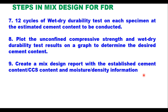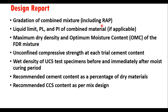After that, create a mix design report with the established cement content and moisture-density information. The design report should contain the gradation of the combined mixture including RAP content, liquid limit, plastic limit, and PI value of combined material if required, the maximum dry density and OMC graph of the FDR mixture, UCS at each trial cement content, wet density of UCS test specimens before and immediately after the moist curing period, and recommended cement content as a percent of dry material. The graphs between UCS versus cement content and loss in weight versus cement content should also be provided.